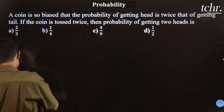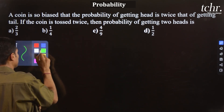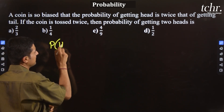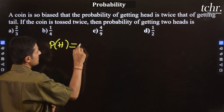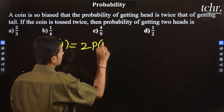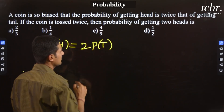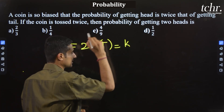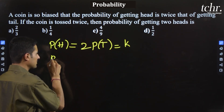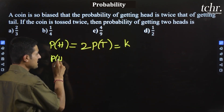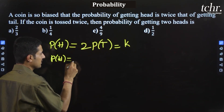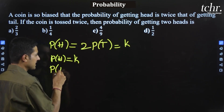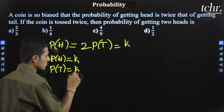The next question: the probability of getting a head is twice that of getting a tail. Setting this equal to some constant k, the probability of getting head becomes k and the probability of getting tail is k by 2.